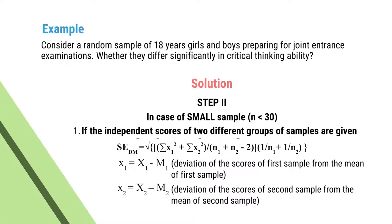In the case of small samples where N is less than 30, there are two possibilities. The first possibility: if the individual scores (deviations) of two different groups of samples are given, then in such a case, the standard error of difference between the two means equals the square root of [(ΣX1² + ΣX2²) divided by (N1 + N2 − 2)] times (1/N1 + 1/N2).